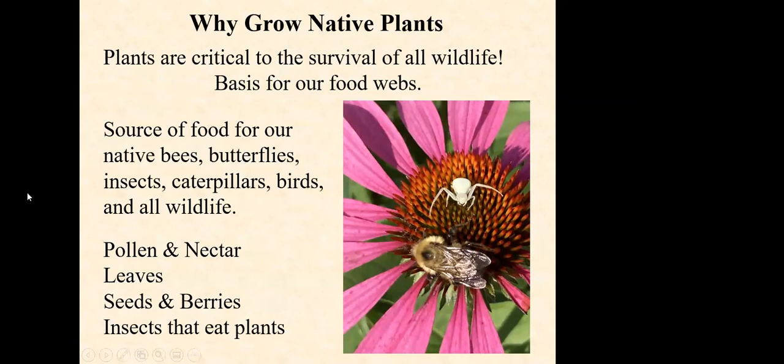So why native plants? Why should we grow them? Well, they're basically the base of the food web for all of our wildlife. They're a source of food for our native bees, butterflies, insects, caterpillars, and birds — whether they need pollen and nectar, or they actually need leaves to chew on, or maybe birds will take seeds or sometimes nectar. Those native plants are there as the base. And if they don't feed on plants, they probably feed on something that fed on plants. So that's why they're the base for our food webs.